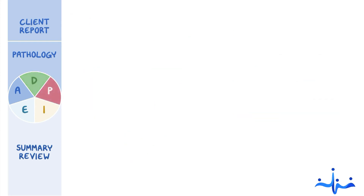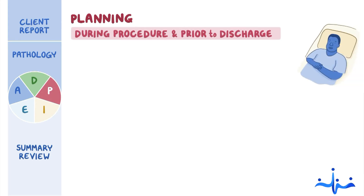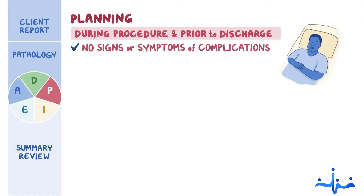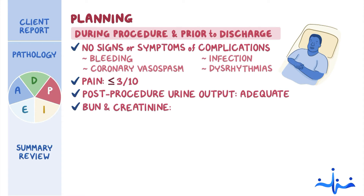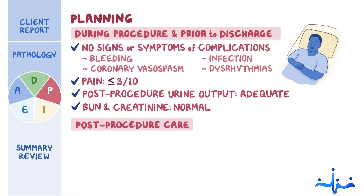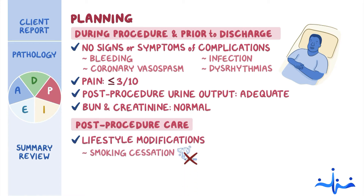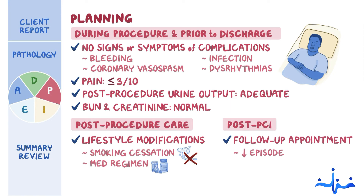Based on your nursing diagnoses, you plan goals that will help Mr. Harris reach optimal outcomes. During his procedure and prior to discharge, Mr. Harris will show no signs or symptoms of complications including bleeding, coronary vasospasm, infection, or dysrhythmias. His pain will be managed at or below his stated level of tolerance, 3 out of 10. His post-procedure urine output will be adequate, and his BUN and creatinine will be within normal limits. He will verbalize understanding of post-procedure care, including how to better manage his hyperlipidemia and CAD through lifestyle modifications, smoking cessation, and adherence to his medication regimen. By his post-PCI follow-up appointment, Mr. Harris will report decreased episodes of angina.